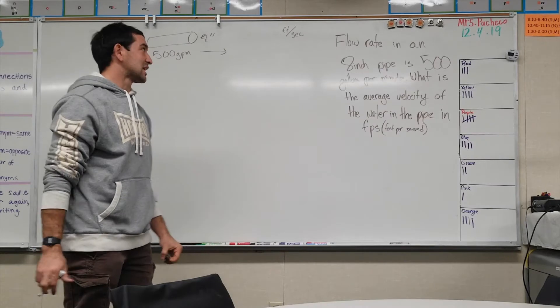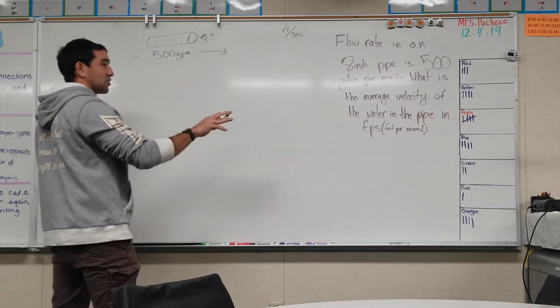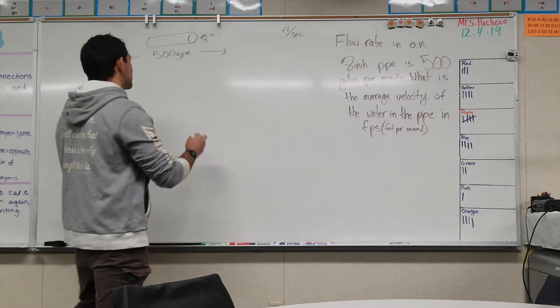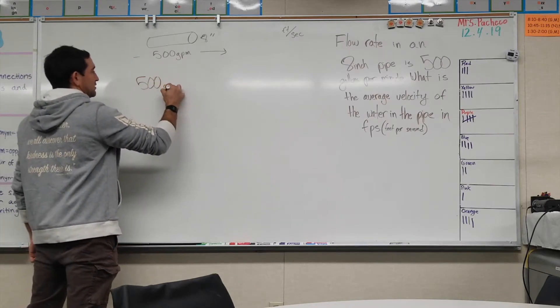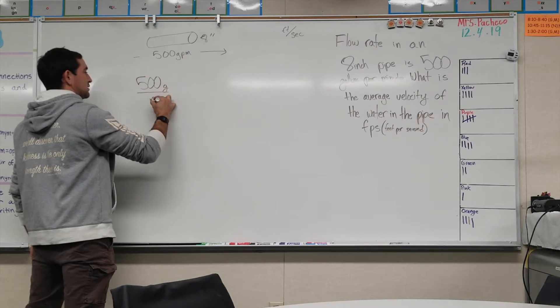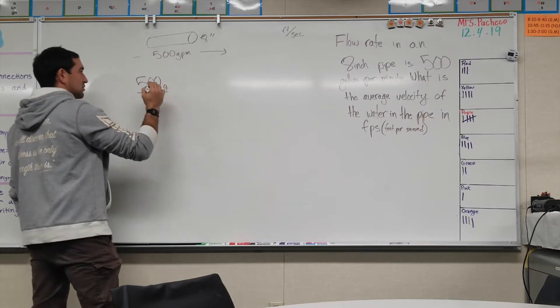Let's try to convert our way as close as we can to feet per second. So we got 500 gallons per minute, so let's get rid of the gallons.